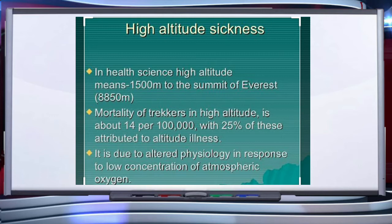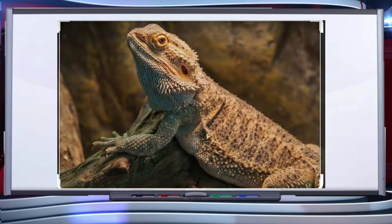The body copes with the low oxygen stress by increasing RBC production (red blood corpuscles), decreasing the binding affinity of hemoglobin, and increasing the breathing rate. This is due to altered physiology in response to the low concentration of atmospheric oxygen.